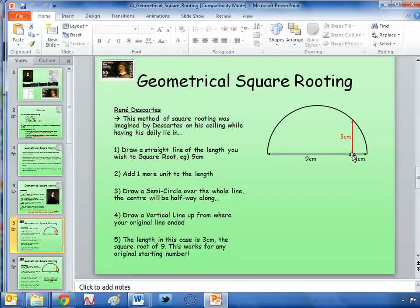And then this is the bit I just couldn't get my head around. If you then measure from the dot, from the end of your nine centimetre line, vertically up to the semicircle, then that height there will always be the exact square root of this number here. And if you want the square root of 10, you just do one 10 centimetres long and add on a centimetre and do the same thing.